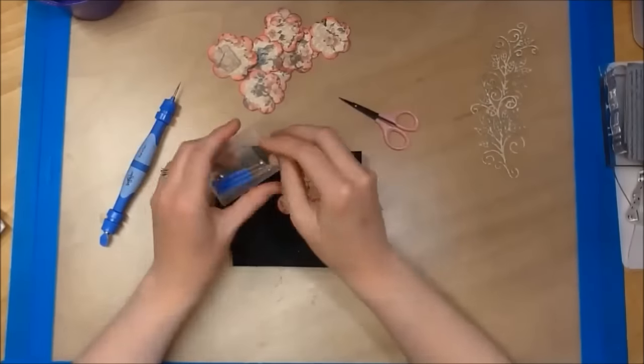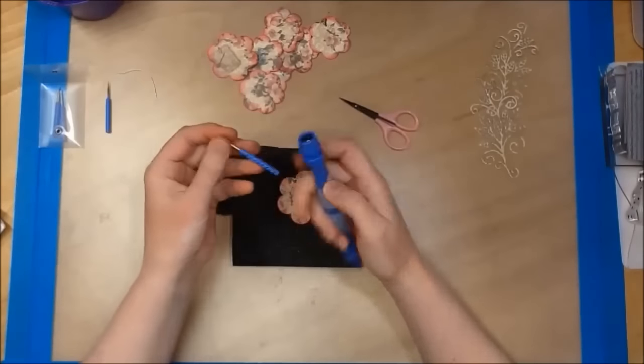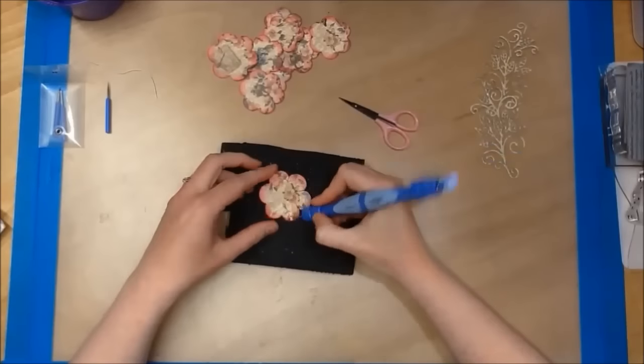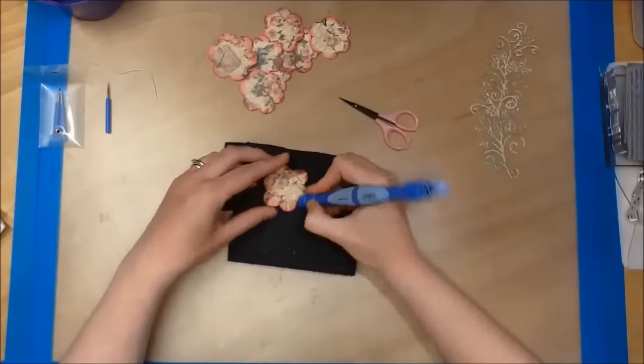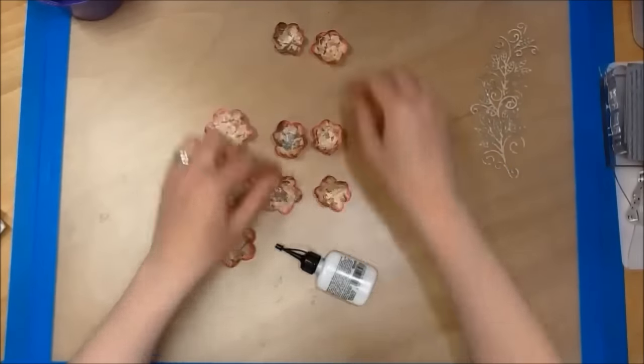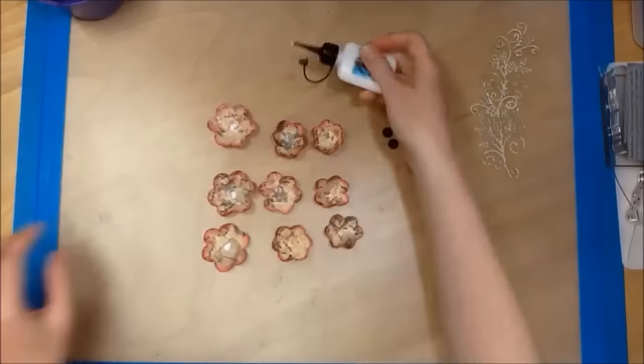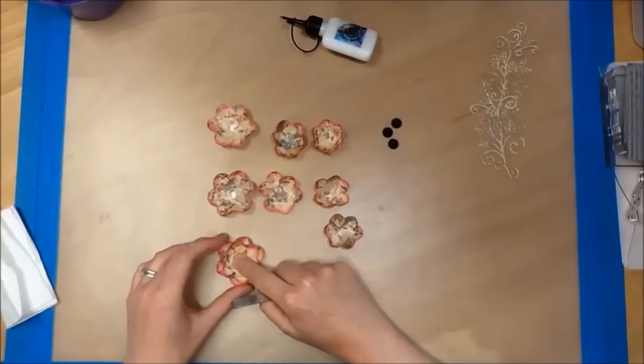So next I am using my stylus tool on my molding mat to add dimension to my flowers. Once I had done that I then used my acrylic glue and stuck all my flowers together.